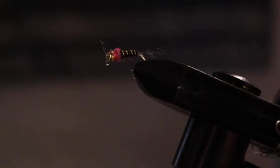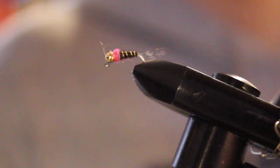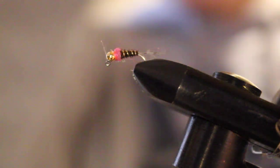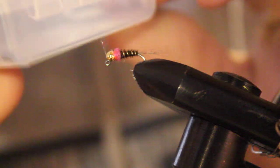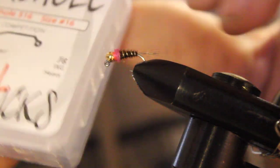Today we are going to be tying a Frenchie flyer. I'm going to tie it on a size 16 Firehole 1x heavy jig competition hook. I'm going to use a 3/32nd tungsten slotted bead.